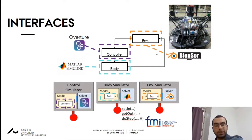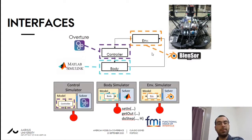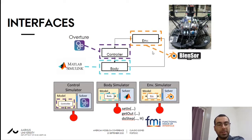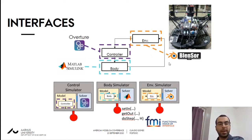Since there are different tools involved in this process, it's crucial that they implement the same interface to enable co-simulation. This is where the FMI standard comes in. A simulator implementing the FMI standard is called a functional mock-up unit, or an FMU.